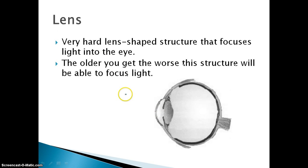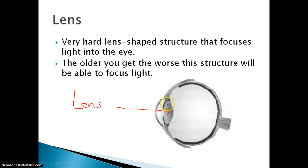Then we have the lens. The lens is a very hard structure that acts very similar to a magnifying lens or the lens of a microscope. It will take in light and bend it so that the image is projected properly into our eye. The older you get, the worse this structure's ability to focus light becomes, because it begins to harden around age 40 to 50 and can't bend and move as much as it used to.